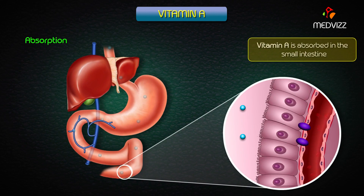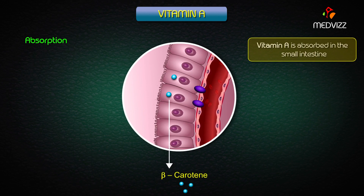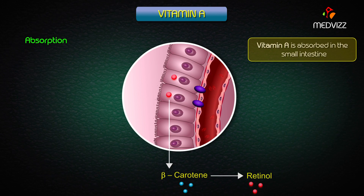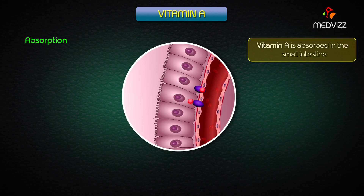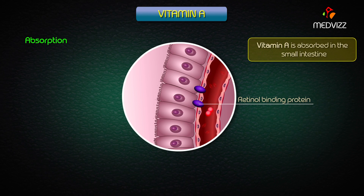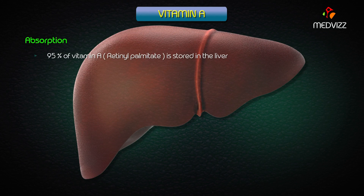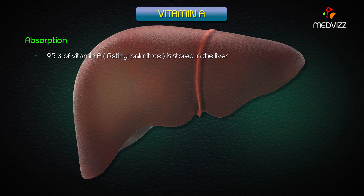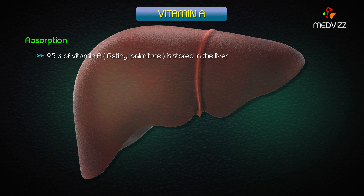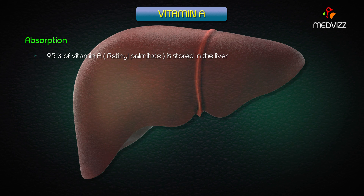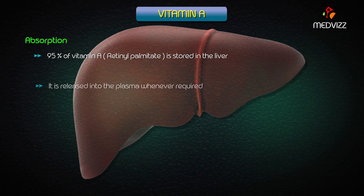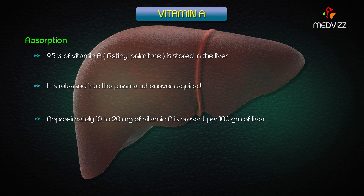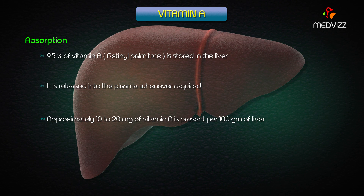Vitamin A is absorbed in the small intestine. Beta-carotene, obtained from plant foods, is converted into retinol in the small intestine, and this retinol is transported in the blood with the help of retinol-binding protein. About 95% of vitamin A is stored as ester form — retinol palmitate — which is the storage form in the liver, released into plasma when required. Approximately 10 to 20 milligrams of vitamin A is present per 100 grams of liver.